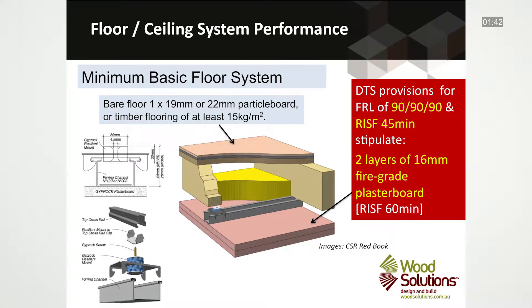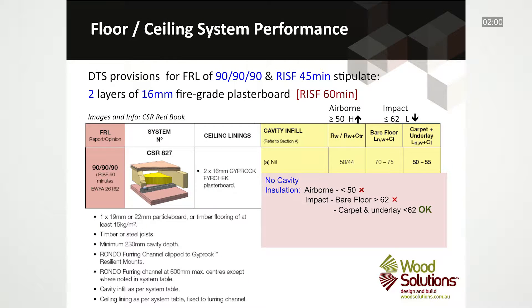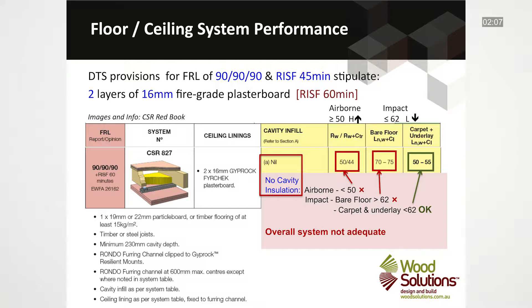Looking at a basic floor system with a bare floor of 19 or 22mm particle board, this would require the fire-rated plasterboard ceiling to be fixed utilizing resilient ceiling mounts, and the inclusion of non-combustible acoustic insulation. Looking at the configuration shown here, you can see that if no cavity acoustic insulation is used, the system does not meet the minimum NCC airborne or impact requirements, so the system is not adequate.